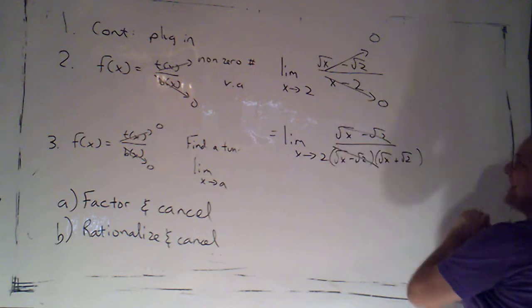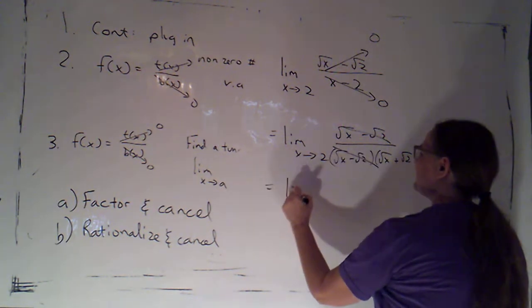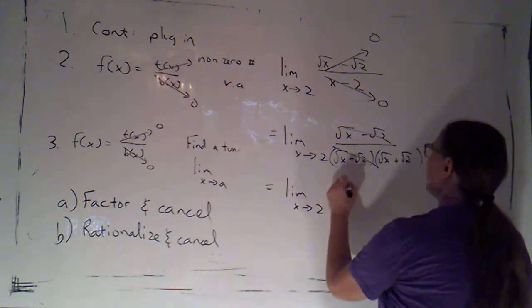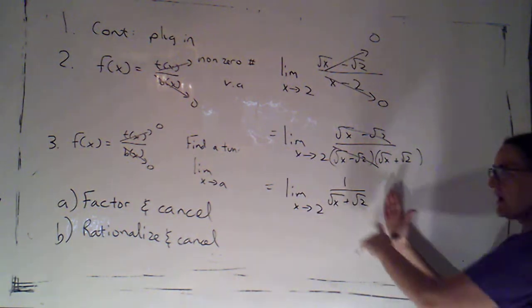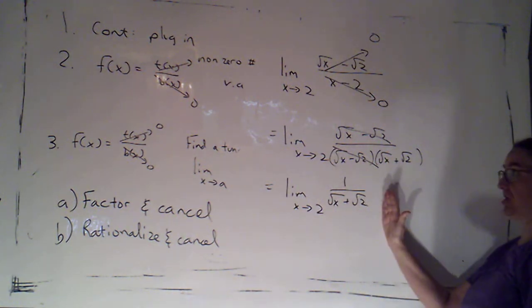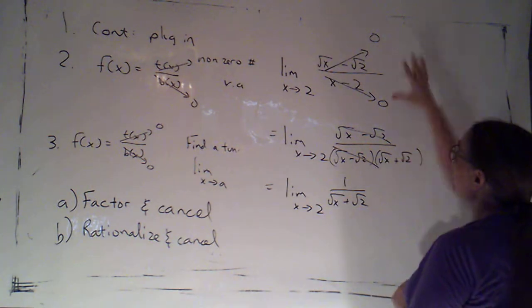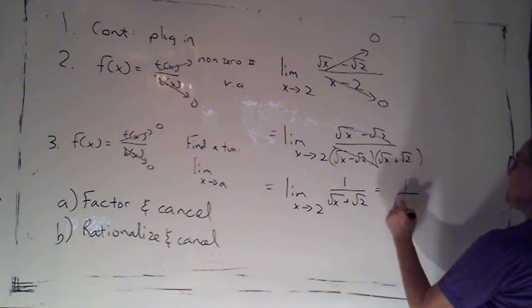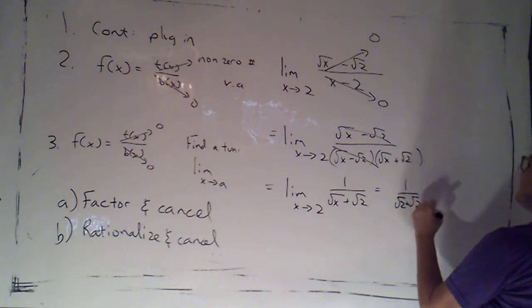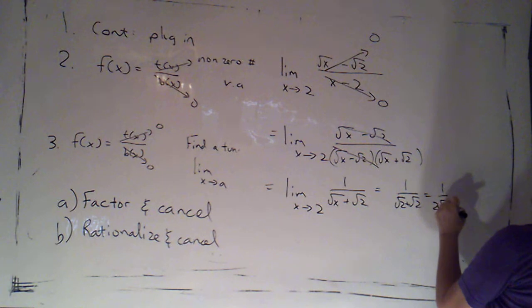Then I could cancel that and say now this is the limit as x goes to 2 of 1 over root x plus root 2. I've created a new function here. 2 was not in the domain of the original function, but it's in the domain here. So this would be 1 over root 2 plus root 2. That's 1 over 2 root 2.